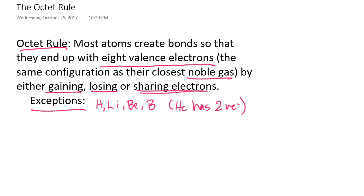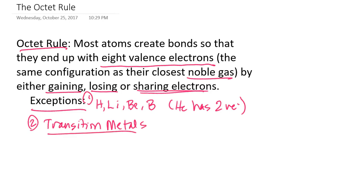The second exception involves the transition metals. When we discuss electron configurations later in the school year, it'll make better sense why transition metals don't necessarily follow the octet rule. Their electron structure is more complicated and allows electrons to behave differently than what the octet rule would predict, and we'll discuss that in greater detail when we get to that topic.